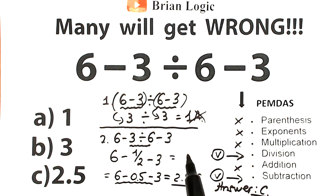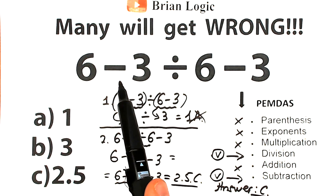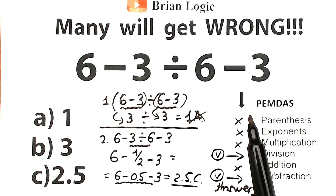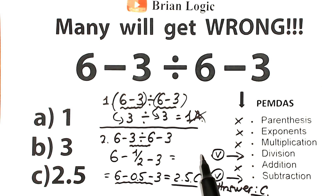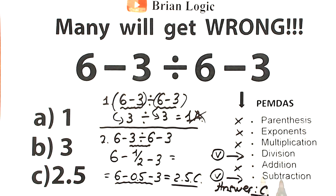Don't use a regular calculator, because if you enter six minus three, get three, then divide by six to get one half, then subtract three, you get the wrong process. You need to enter the whole entire problem at once. In a scientific or graphing calculator, you'll get 2.5. That's my explanation for this challenge — don't feel bad if you got it wrong. I have a lot of videos on my YouTube channel if you need help. See you in the next video, and have a great day!